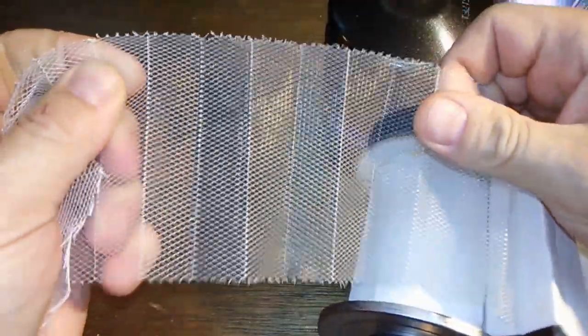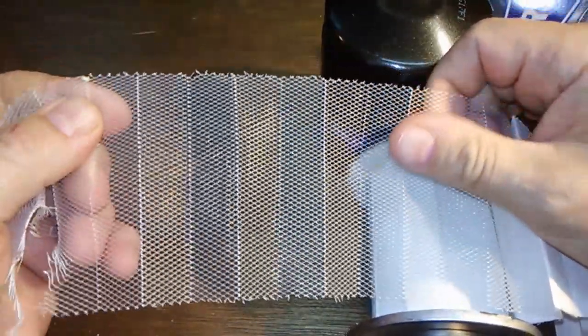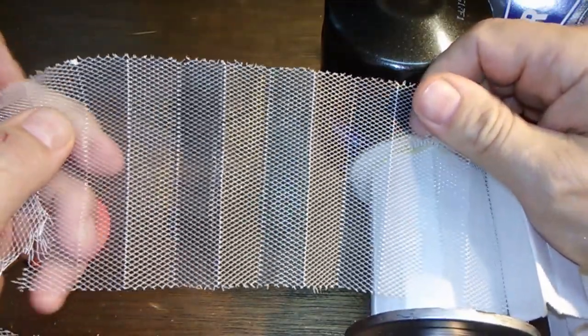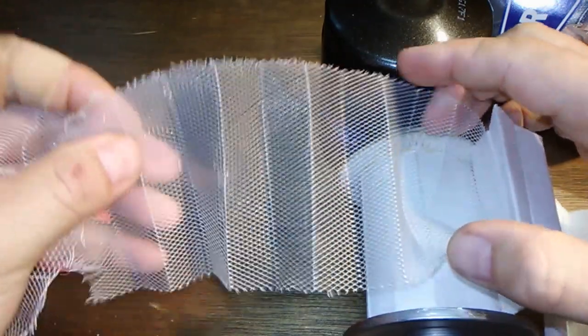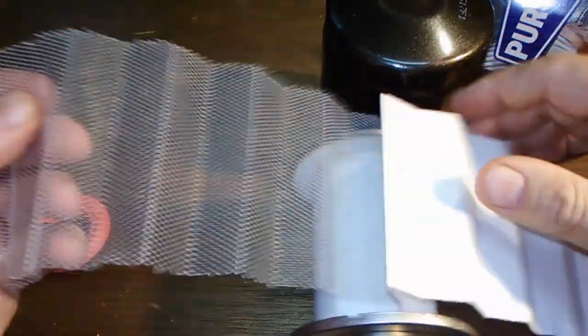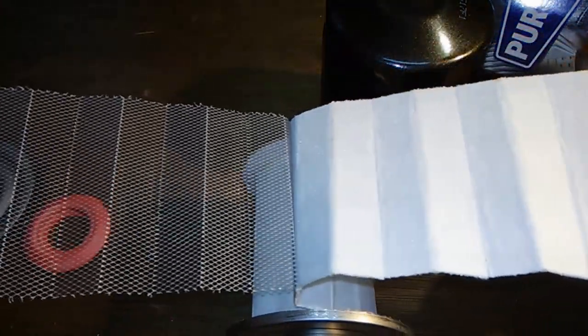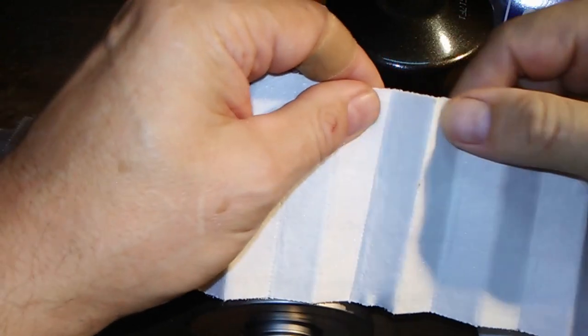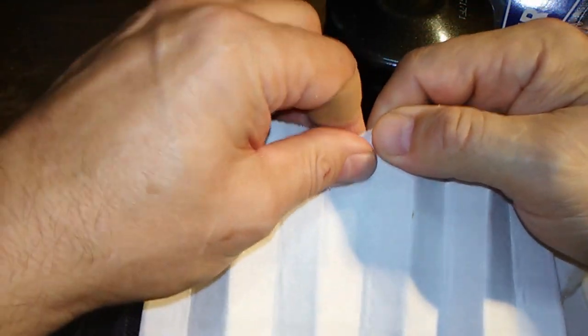It's similar to the metal backings they use on the Wix filter and on the Fram Ultras, but this one's plastic. I think it's pretty cool. I've never seen something like this before. I'm going to, in the future, open some more up and see if they're all like this. But this is on the Purolator Boss filter.